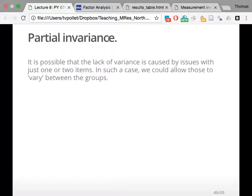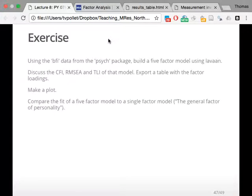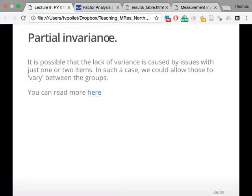All I want to say with partial invariance is that sometimes you can't get it to work, and it's just one or two items. If only you could fix those one or two items, everything would work perfectly. Then you would speak of partial invariance and say, for those two, we're going to allow them to vary between those two groups. Any questions?